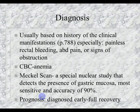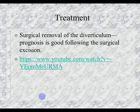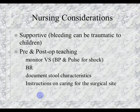Treatment is surgical removal of the diverticulum; prognosis is good following surgical excision. There are good YouTube videos showing the removal procedure. Nursing considerations are supportive — bleeding can be traumatic. Pre- and post-op teaching, monitoring vital signs particularly blood pressure, bed rest, documenting stool characteristics pre- and postoperatively, and instructions on caring for the surgical site are important upon discharge.